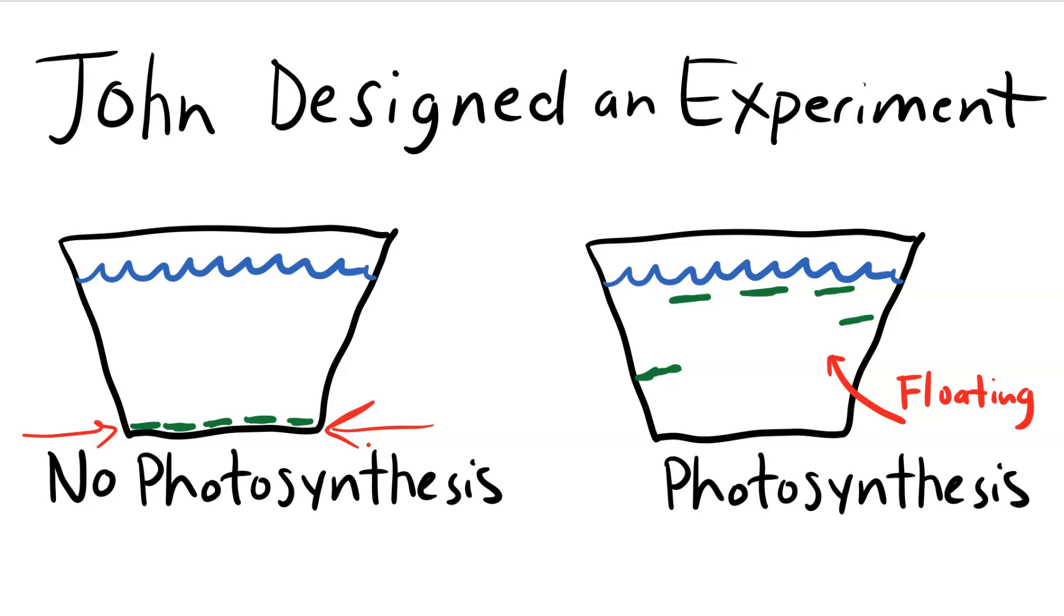If you're interested in the details of this protocol, which we will be using later in the year, you can watch this video here. But for now, just suffice it to say that this is the starting point with the discs at the bottom. If there is no photosynthesis, they stay on the bottom. If there is photosynthesis, then you'll slowly start to see them rise up off the bottom. The speed at which they rise as a group over time describes their rate. So John is interested in seeing if increasing light intensity increases the rate at which they float.